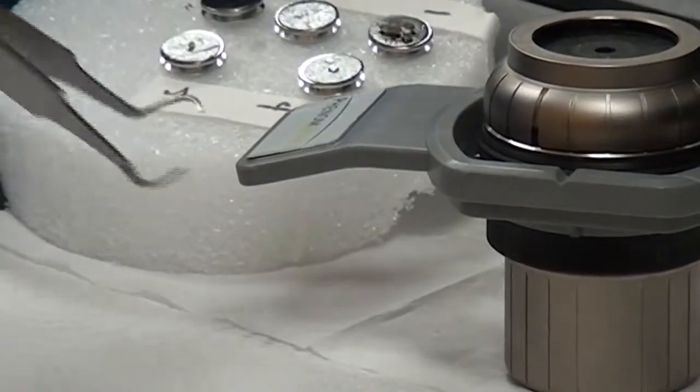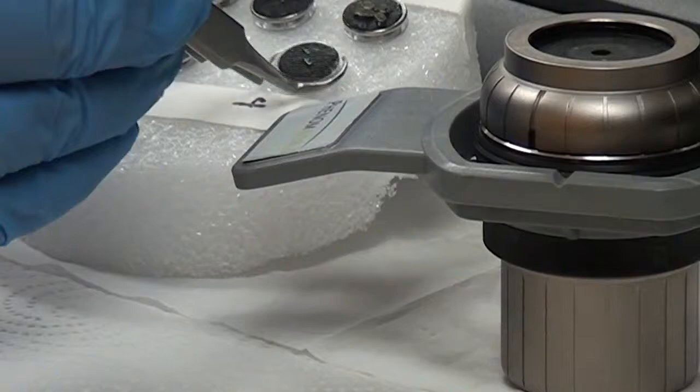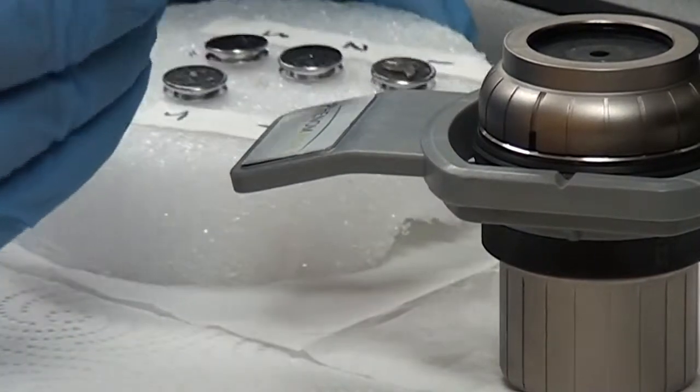Now the stub is mounted on the sample holder using the special tweezers. This is the calcium carbonate sample.